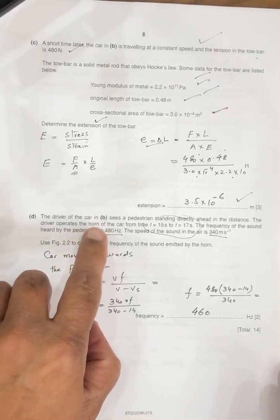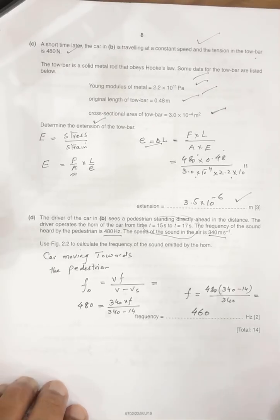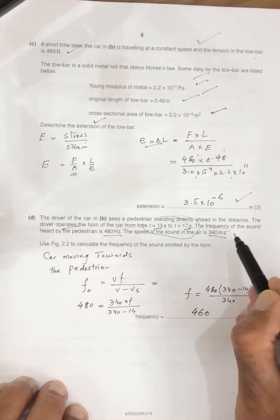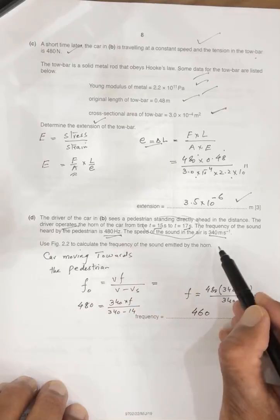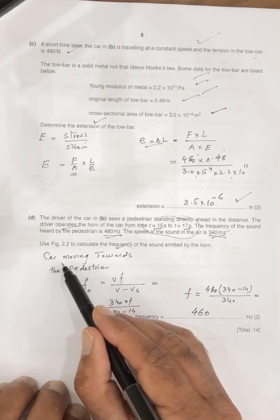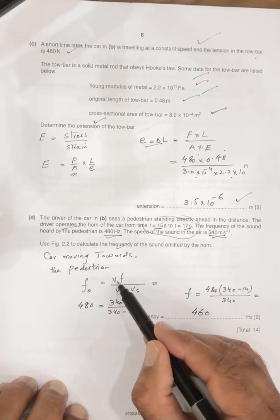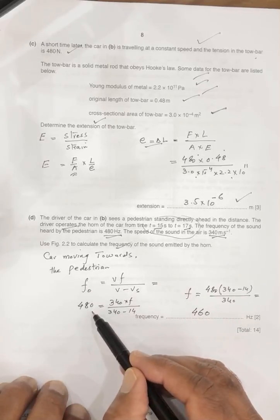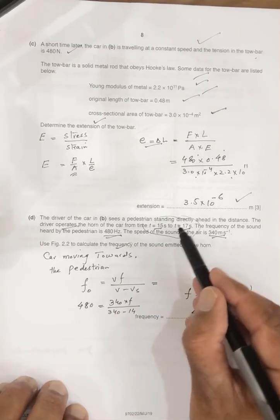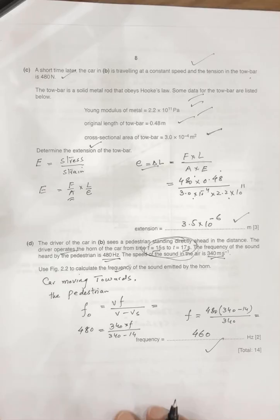Next question is the driver of the car sees the pedestrian standing directly ahead in the distance. At the time 15 to 17, he operates the horn, the frequency of the sound heard by the observer 480, and the speed of the sound is 340. We have to calculate the actual frequency of the sound. Look, the car is moving towards the observer, so F0 observed frequency, VF over V minus Vs. This observed frequency given 480, V is 340, F required 340V, and at this time the car's speed is 14, so after calculating the answer is 460.